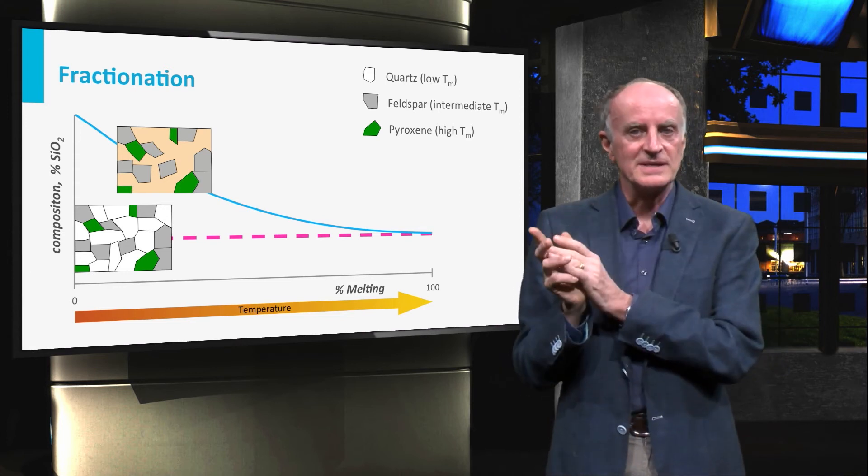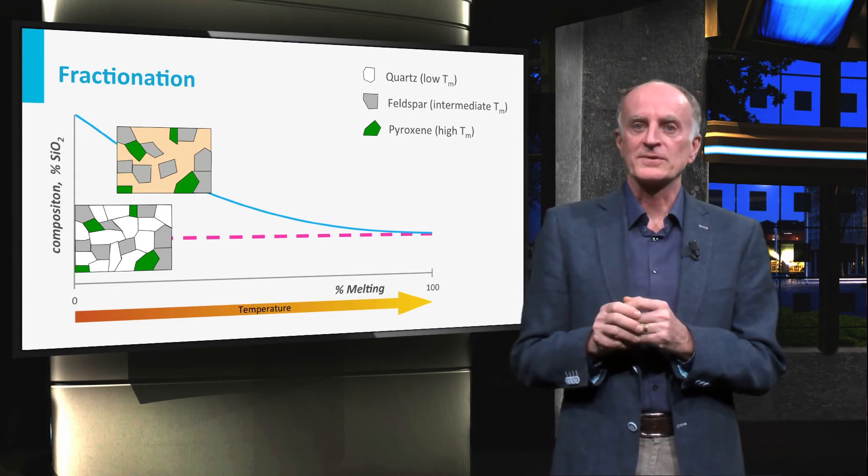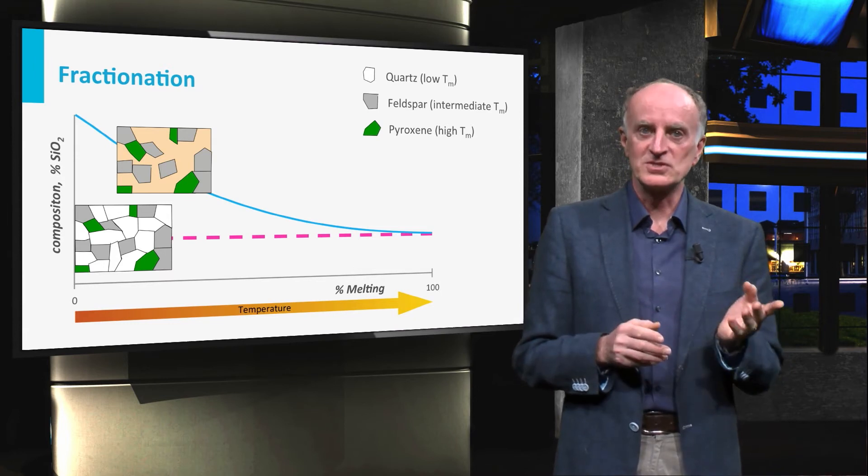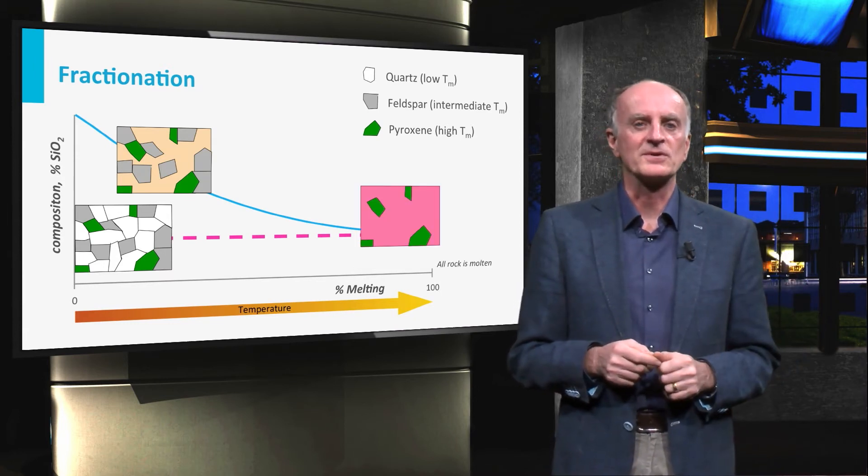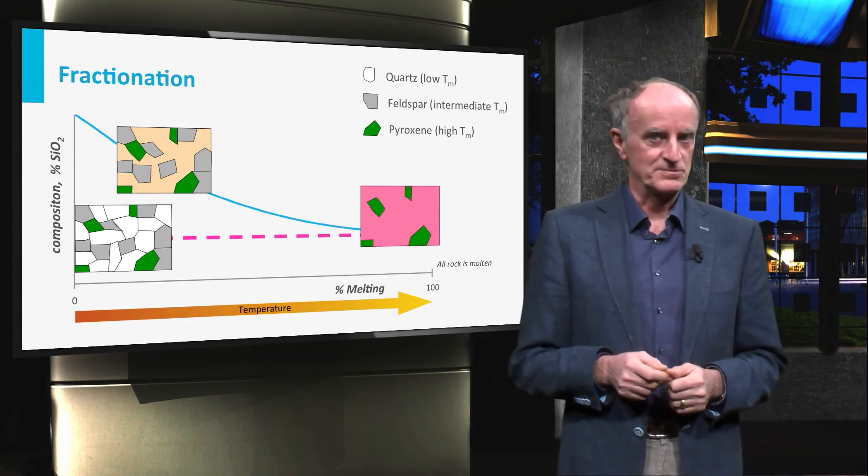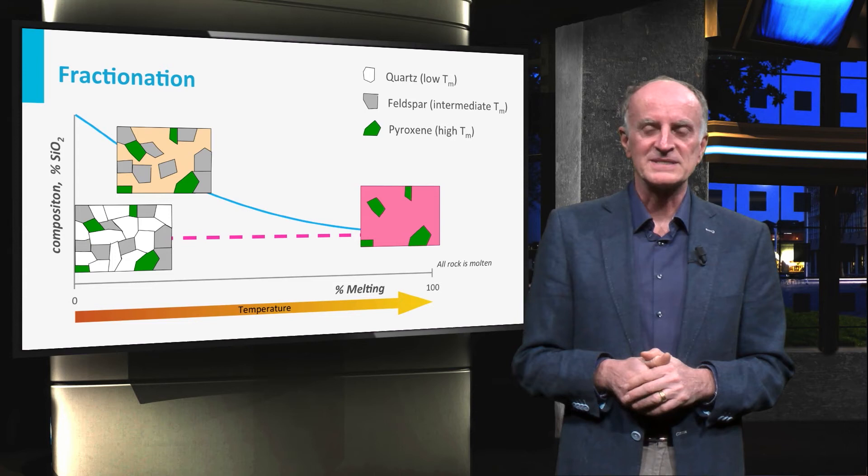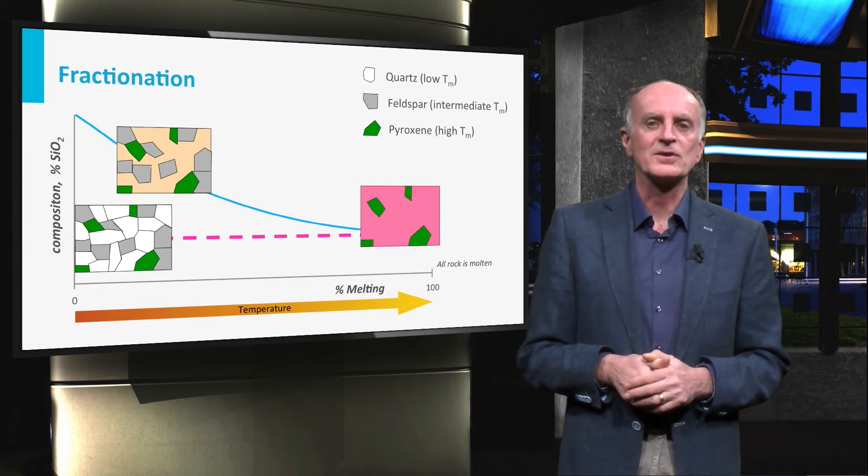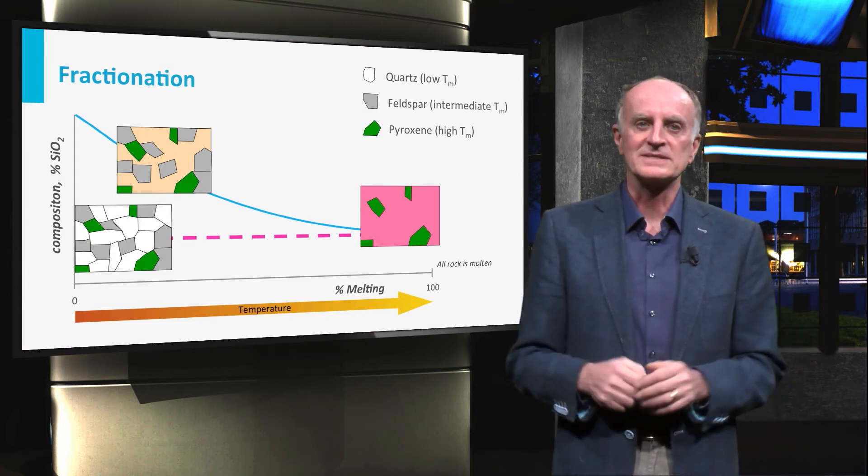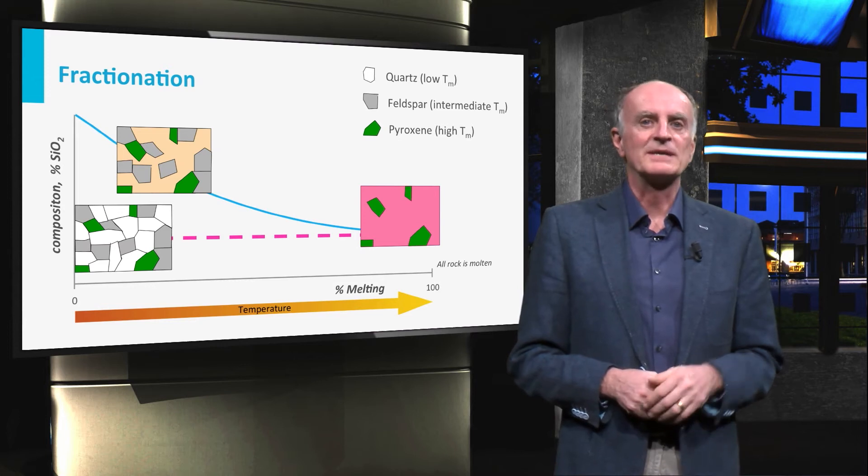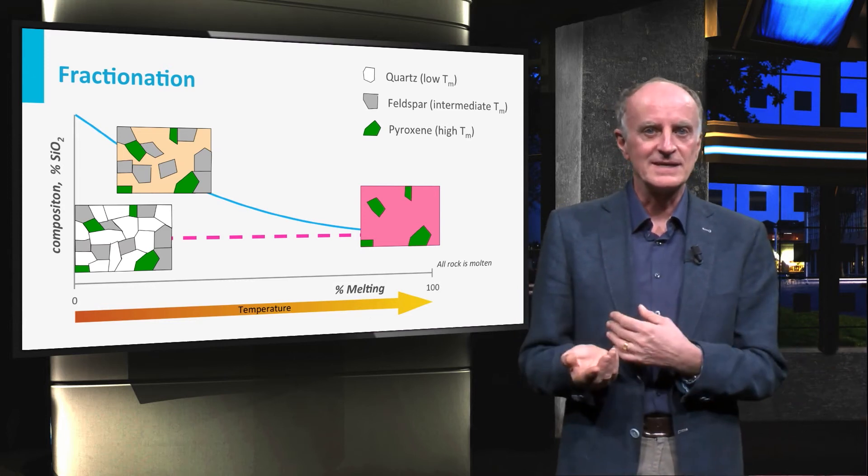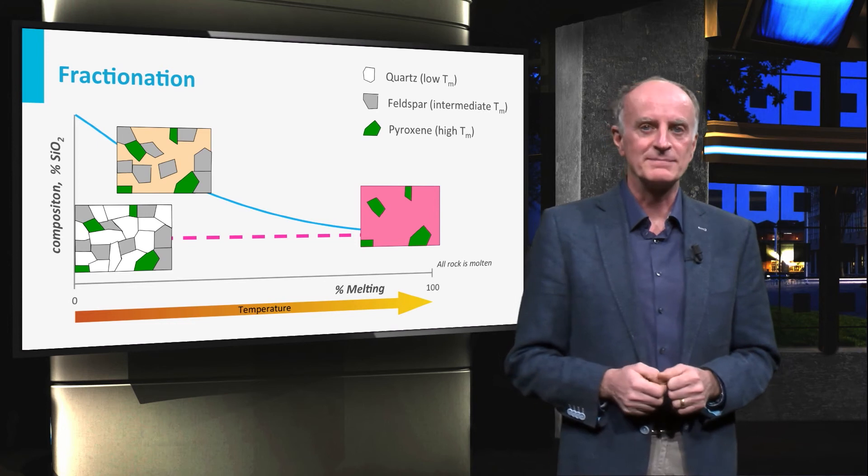With increasing temperature, a larger portion of the rock will melt and the composition of the magma will approach that of the parent rock. As a result of fractionation, limited melting produces magmas which are acidic and relatively cold. Magmas generated by complete melting, on the contrary, are more basic and have generally higher temperatures.